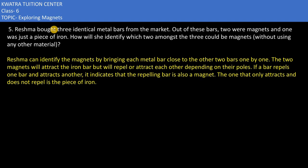Let's have a look at the fifth one. They are saying Reshma bought three identical metal bars from the market. Out of these bars, two were magnets and one was just a piece of iron.